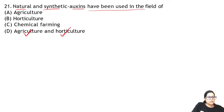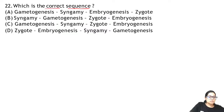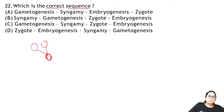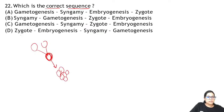Question 22: what is the correct sequence? The correct sequence is: first gamete formation happens — that is gametogenesis. Then these gametes fuse — that is syngamy — and a unicellular diploid zygote forms. This zygote divides and forms an embryo. So the answer is C.